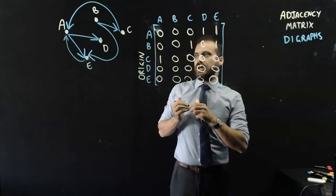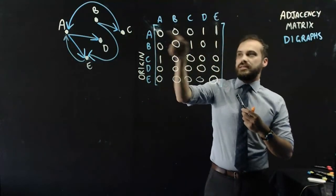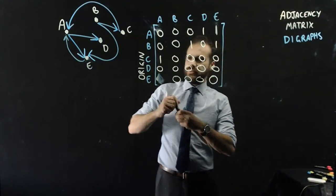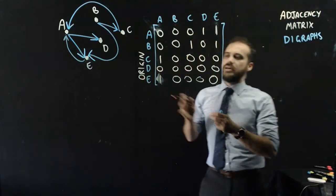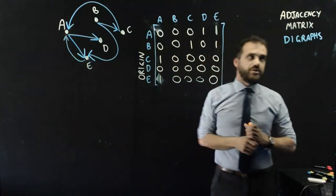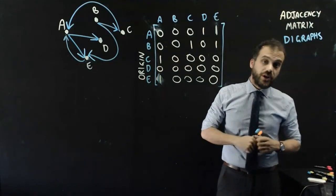In that case, A gets eaten by E, but also E gets eaten by A. So that is an option with a diagraph for an arrow to go both ways. There's our adjacency matrix for the diagraph.